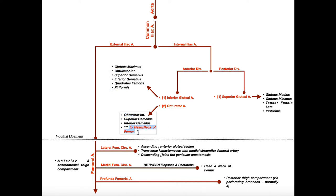One very important point is that the obturator artery also gives off an artery to the head and neck of the femur. There is another artery to the head and neck of the femur supplied by the medial femoral circumflex artery — these are different arteries. The branch from the obturator artery actually travels within the ligament to the head of the femur, also called the ligamentum teres femoris. That ligament is not for stability; it's actually a conduit for arteries, nerves, and lymphatics to get to the head of the femur. The branch from the medial femoral circumflex artery does not move through that ligamentum teres femoris.